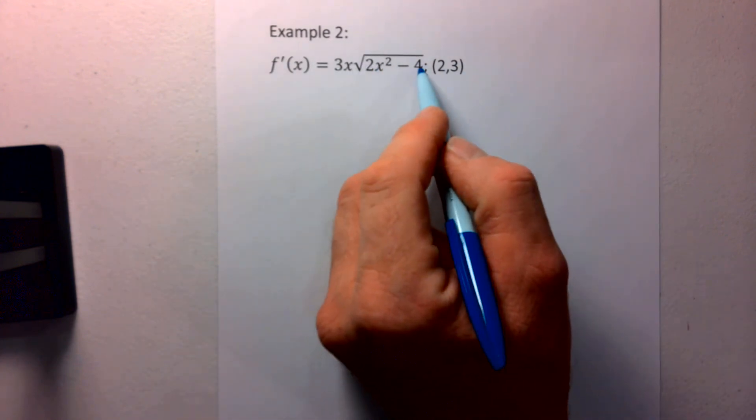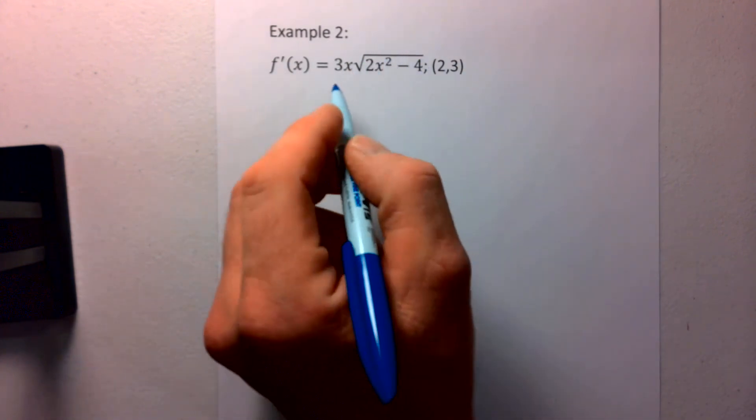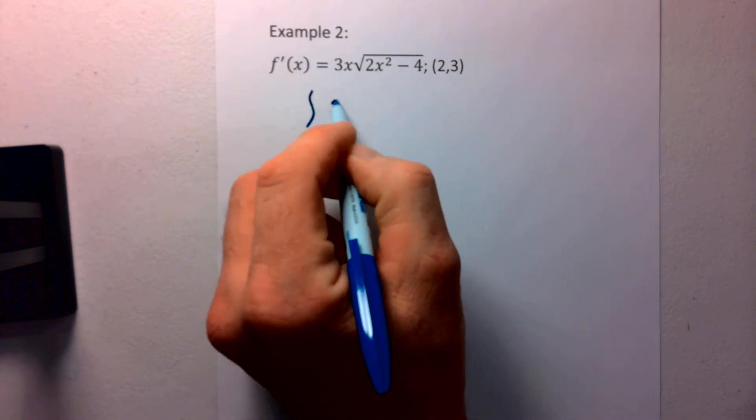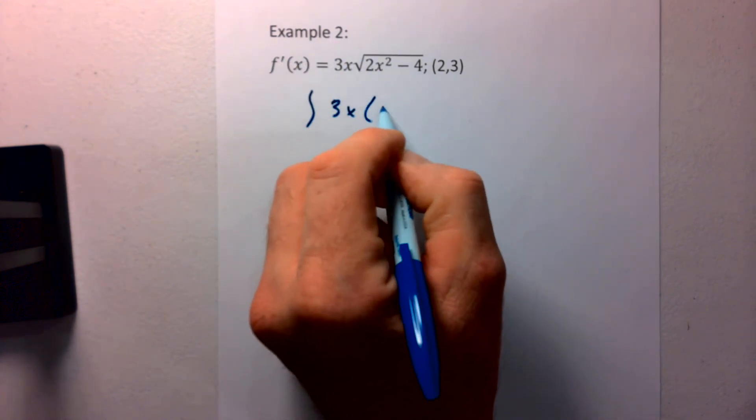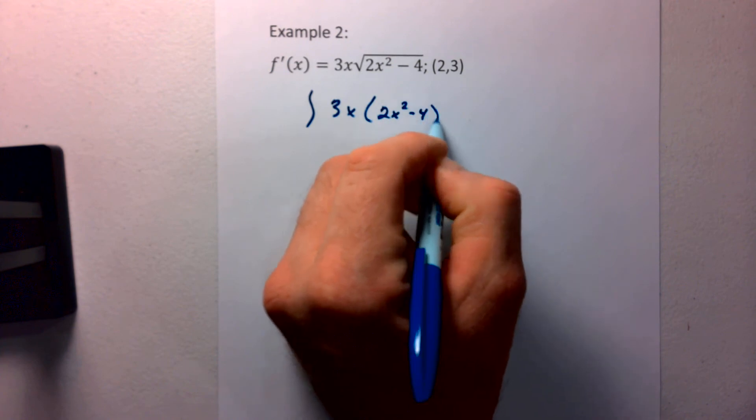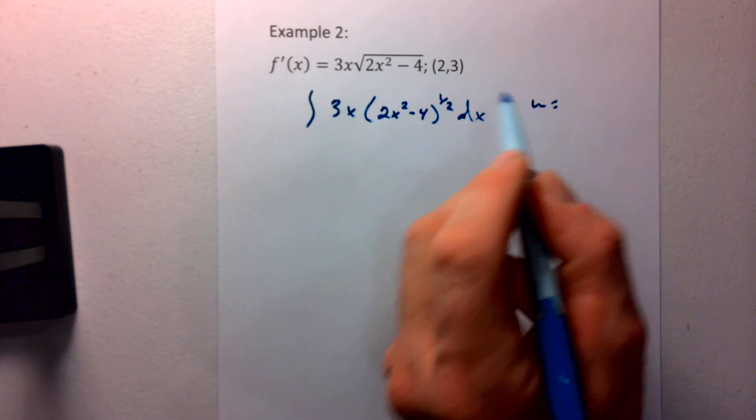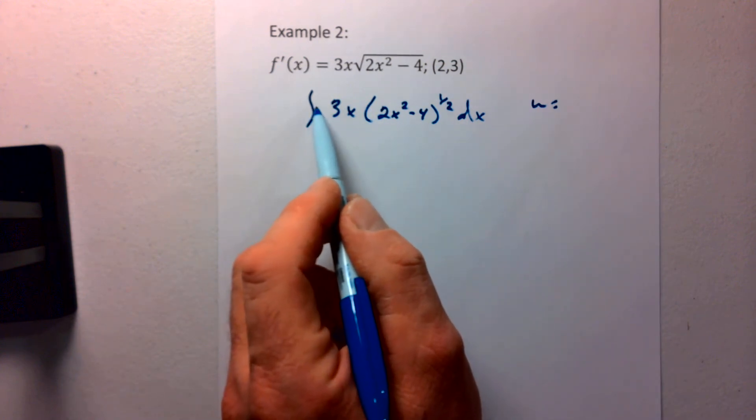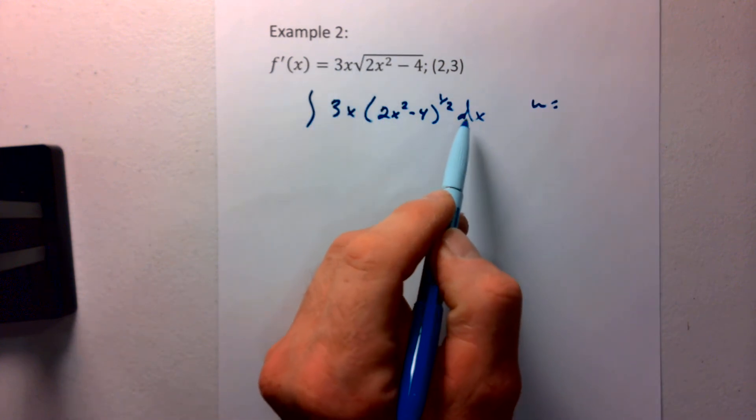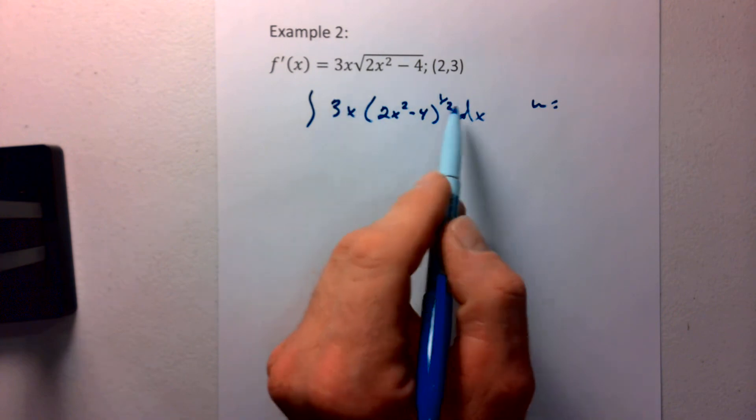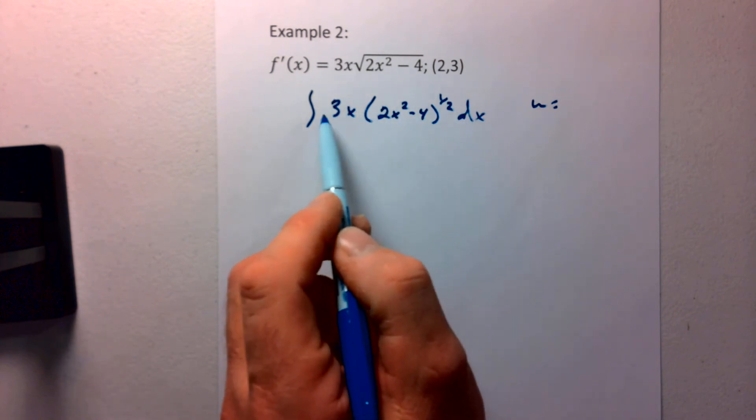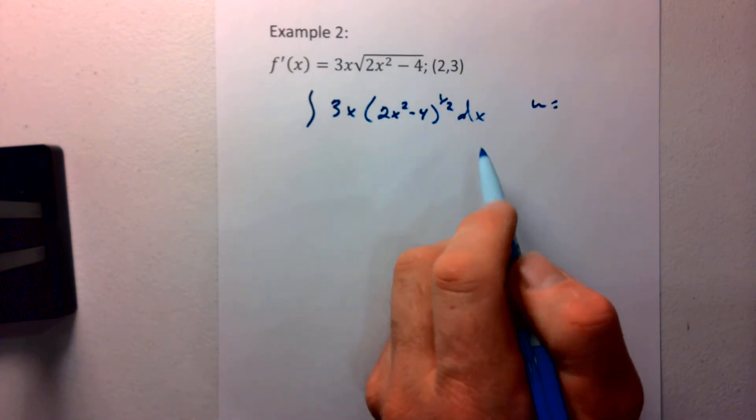Here I have 2x squared minus 4 to the 1 half power. So I can write this as the integration of 3x times 2x squared minus 4 to the 1 half dx. Again, remember when we write our integration from a problem, we always want to put that variable of integration there. It's not a complete integration sentence if we don't have the variable of integration.